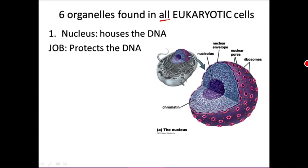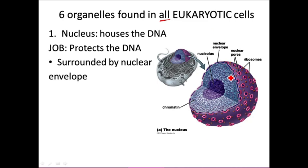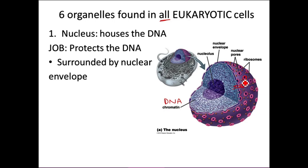The nucleus is so important that its membrane has its own name: the nuclear envelope. Chromatin is another name for DNA — it's DNA that's highly packaged. On the nuclear envelope, there are pores — little holes in the membrane — that allow some things to go out of the nucleus and other things to go in. Some ribosomes are attached to the nuclear envelope, and when they are, they're making proteins necessary for the nuclear envelope.